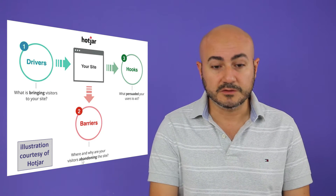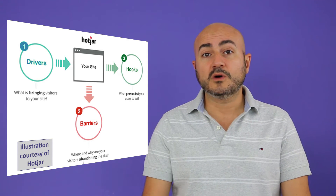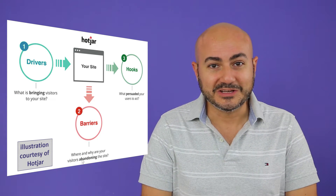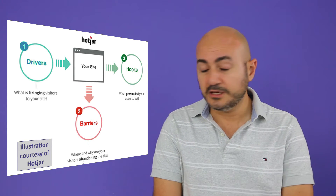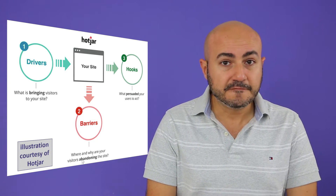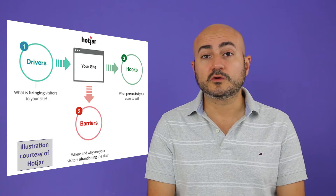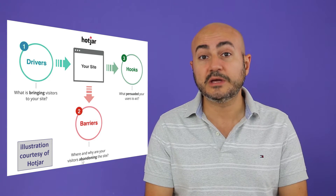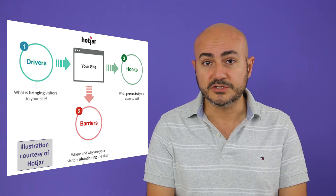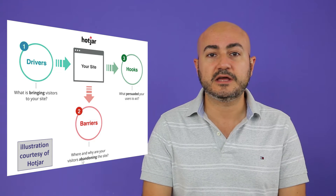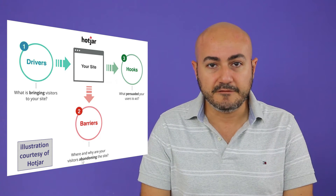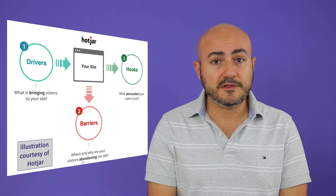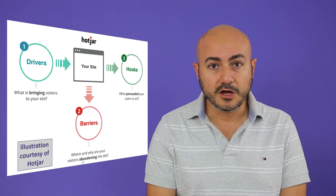When you want to work with Hotjar you need to understand the bigger picture, and I'll help you understand it. This graph you're seeing right here is from Hotjar, and it tells you that in order to start optimizing your home page or doing A/B tests on your web pages, you first need to understand your website behavior — your user website behavior. There are three elements you need to be aware of.